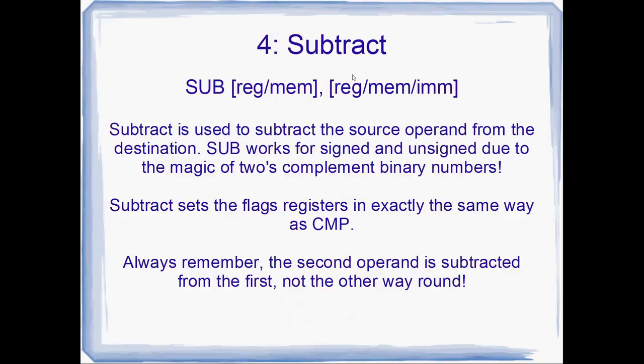Number 4: SUB. I don't know how much you can do without using subtract, but number 4 in my list is SUB. Subtract is used to subtract the second operand from the first and store the result in the first operand. It works for both signed and unsigned, due to the magic of two's complement binary numbers — a lot of the reason x86 uses two's complement is because subtract and addition are so easy on two's complement numbers. Subtract sets the flags in exactly the same way as CMP. Always remember that the second operand is subtracted from the first, not the other way around.